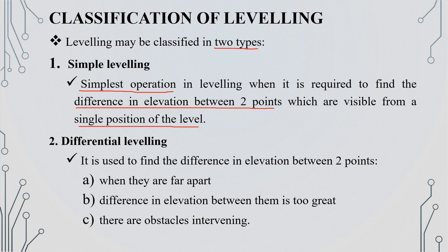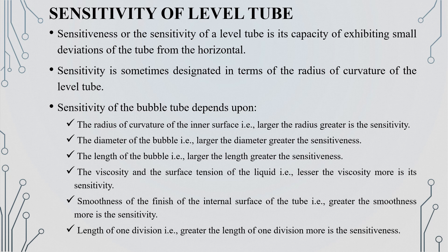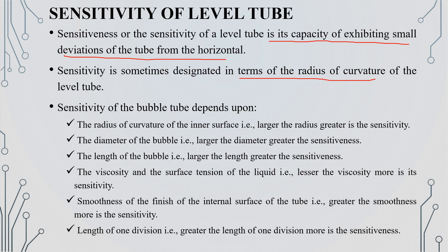The second one is Differential Leveling, where we also use two points to find the difference in elevation, but we use multiple instrument positions when obstacles intervene. We also look at the sensitivity of the level tube — it is the capacity of exhibiting small deviations of the tube from the horizontal. The sensitivity is used to designate the radius of curvature of the bubble tube.